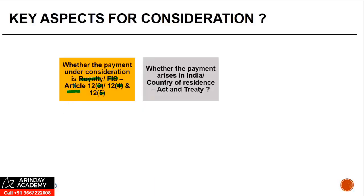The second key aspect is whether the payment arises in India, the country of residence, or a third contracting state. For this, there are provisions in the treaty which we will see subsequently, but there are also provisions in the Act — specifically Section 9, Subsection 1 — which tells you that royalty arising or deemed to arise in a contracting state.